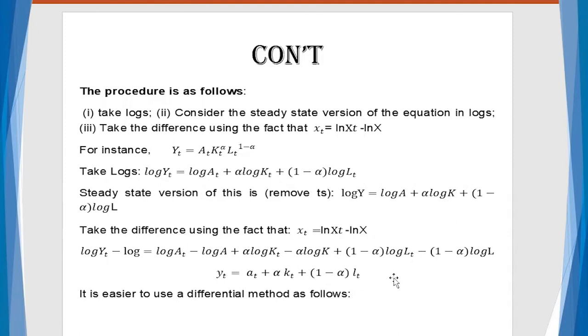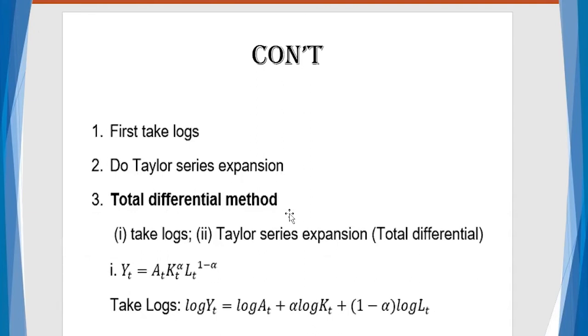So if we now take the difference between the log and the log without t, then you have this equation. And then that equation, if we look at them, you can rewrite as this final equation. So if you look at it, it's log y_t minus log y will give you small y_t. So that means we have transformed the dependent variable there to its log linearized forms. Now from this end, right from this point now, you can now take the total differential.